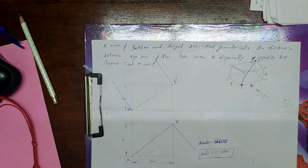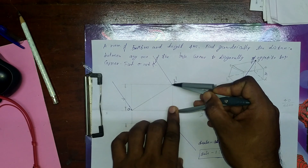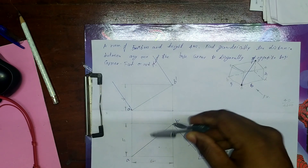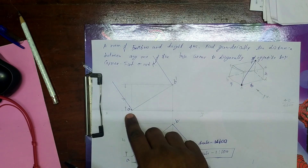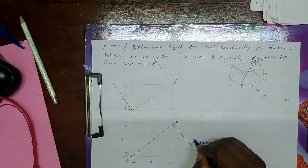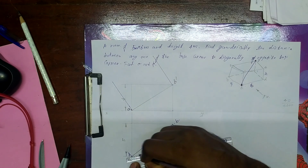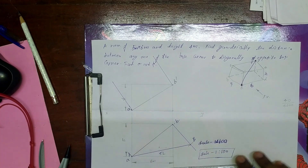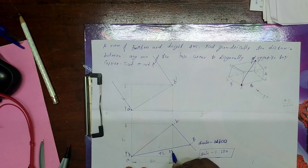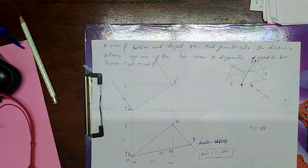Then we can mark the distance. We find the true length. I got 88mm — true length is equal to 88mm. Then the front view is also equal to 88mm.